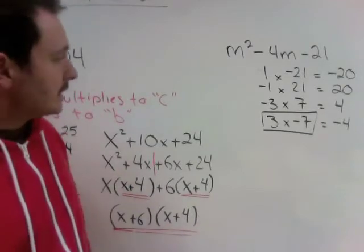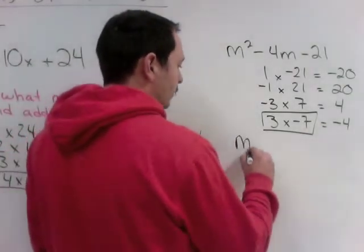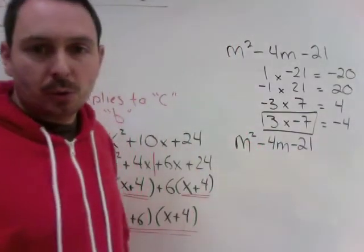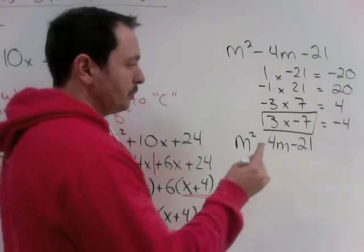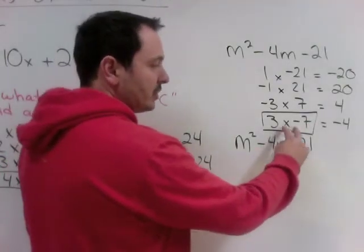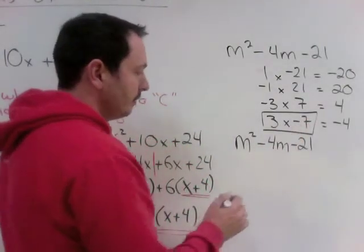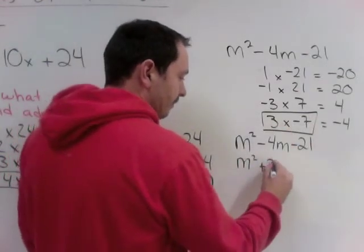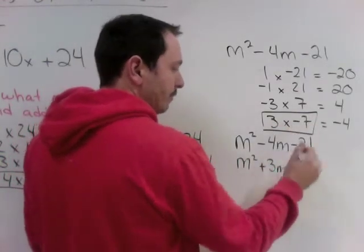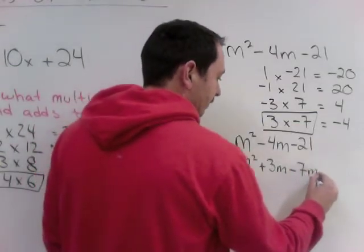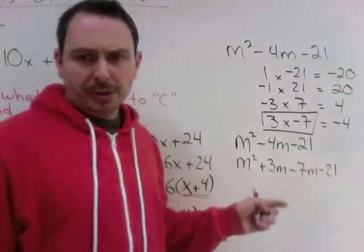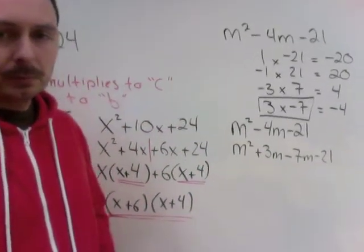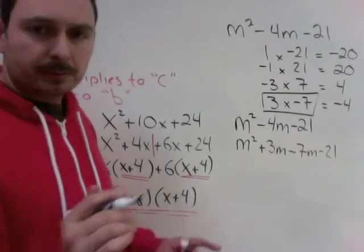So, we have m squared minus 4m minus 21 is my original question. I'm going to break the middle term into the two pieces that fit my criteria. So, it was a plus 3m and a minus 7m. It doesn't matter what order you go. If you went minus 7 plus 3, it still works out.